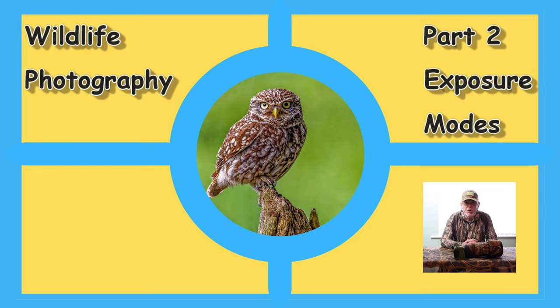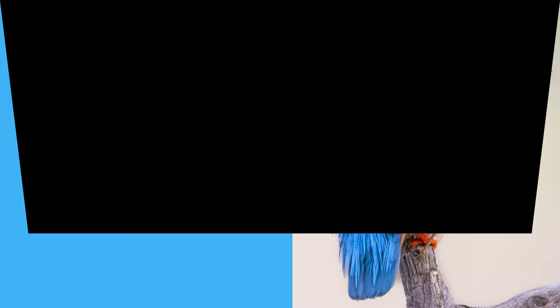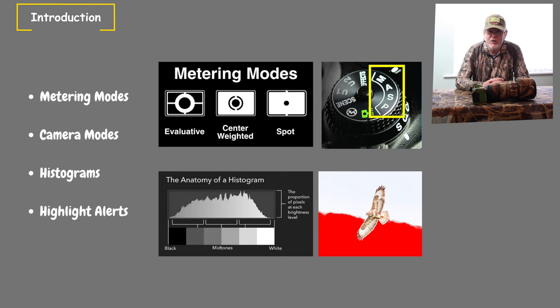Hi and welcome to part two of my wildlife series on exposure. In this video, part two, we're going to look at exposure modes. Understanding the different types of camera modes is essential if you want to be able to control your exposure. You need to know what each of the modes do and when to use it in wildlife photography. What the camera modes allow you to do is to control the details of an exposure, as we looked at in part one, which was to do with the exposure triangle — the aperture, the shutter speed and the ISO. Once you have an understanding of the exposure triangle, the next step is to look at exposure modes.